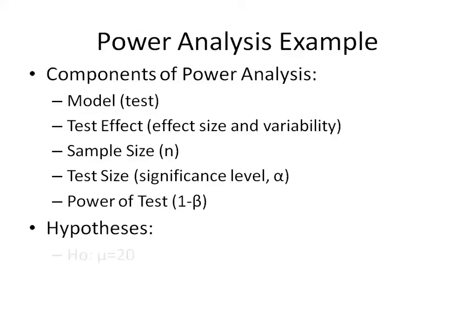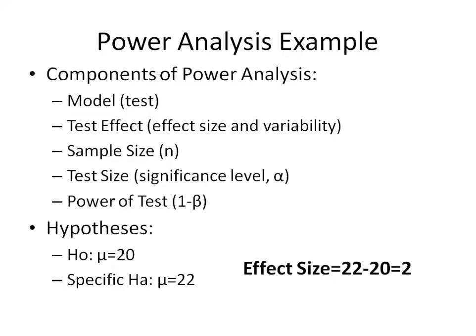So, what are our hypotheses? Our null hypothesis is that the mean is equal to 20, or the mean half-life for this cancer drug is the same as the current standard. Our specific alternate hypothesis is that the mean is 22 hours. In this case, our effect size is 22 minus 20, or 2.